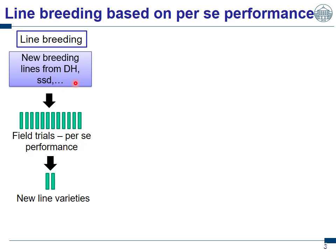In line breeding, you generate new lines by the DH method, SSD, or pedigree. Then you have the lines, put them in the field, and test them. Their value is their per se performance — the value you also test in the registration trial, which is their value to be released.